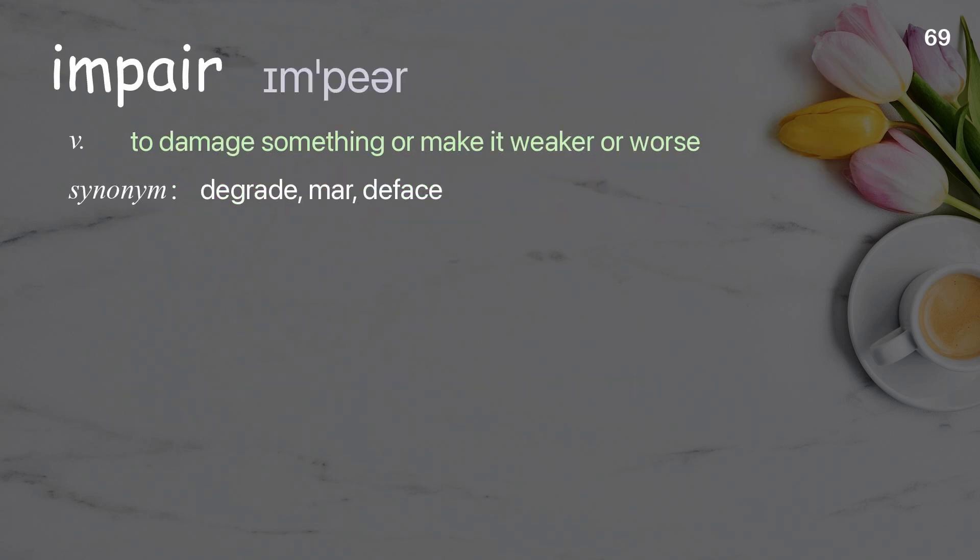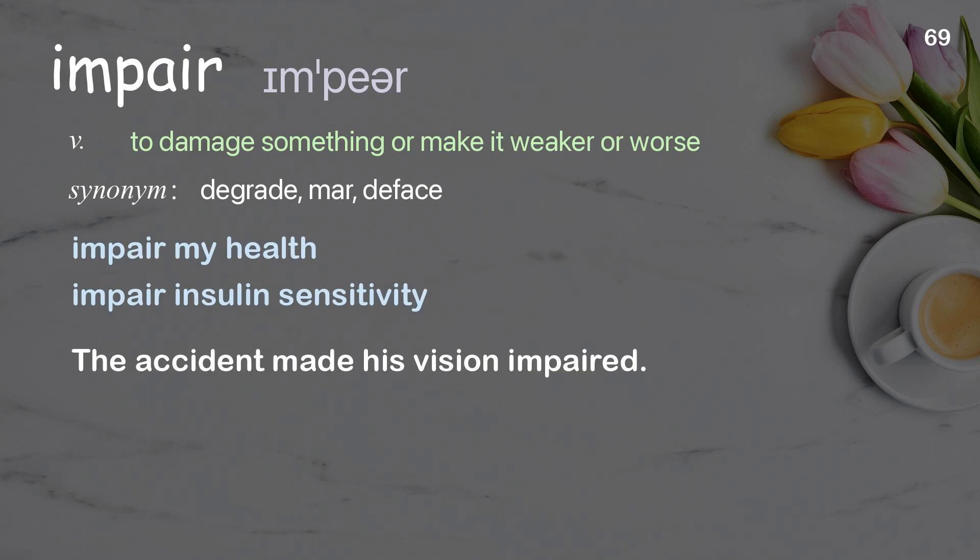Impair: to damage something or make it weaker or worse. Examples: impair my health, impair insulin sensitivity. The accident made his vision impaired.